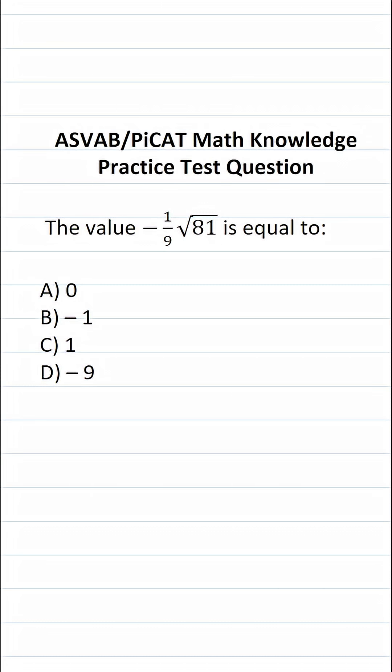This math knowledge practice test question for the ASVAB and PICAT asks: what is the value of negative one-ninth times the square root of 81? On the ASVAB and PICAT, you're not given a reference sheet or a calculator.